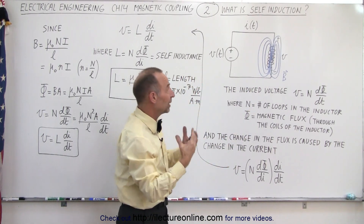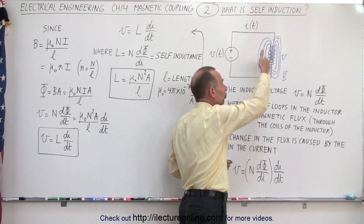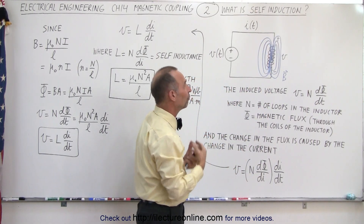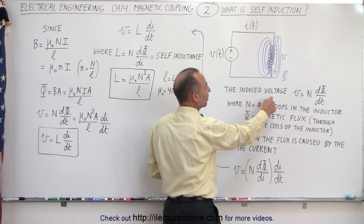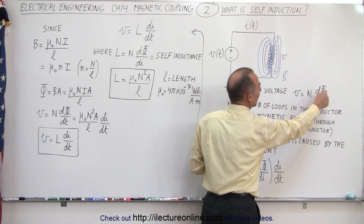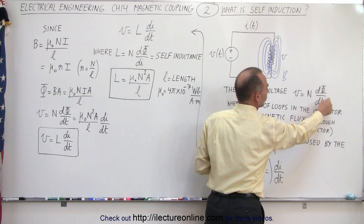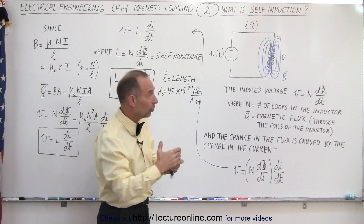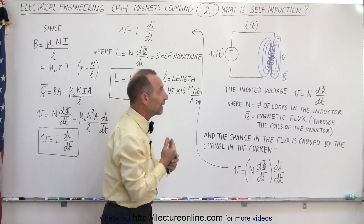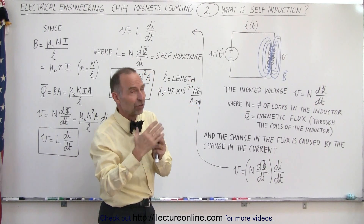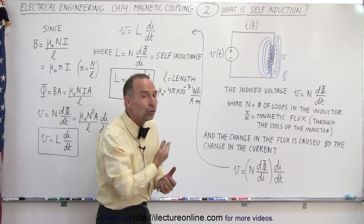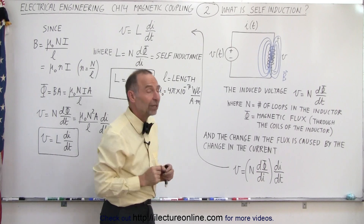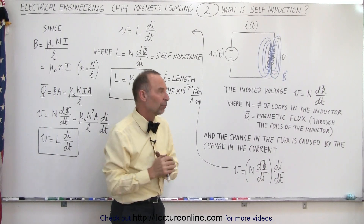Whenever we have a changing magnetic field, that means we're going to have a changing flux through the loops of the inductor. And that will induce a voltage. The voltage that is induced is equal to the number of loops times the rate of change of the flux with respect to time. So a change in voltage causes a change in current, which causes a change in magnetic field, which causes a change in flux through the loops, which then causes an induced voltage.